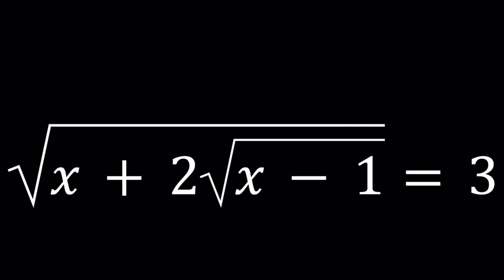Hello everyone, in this video we're going to be solving a radical equation, a nested radical equation. We have the square root of x plus 2 times the square root of x minus 1 equals 3 and we're going to be solving for x values. I'll be presenting two methods as well as show you a graph at the end. So let's start with the first method.